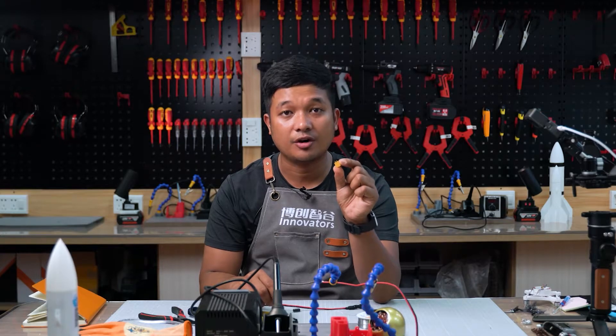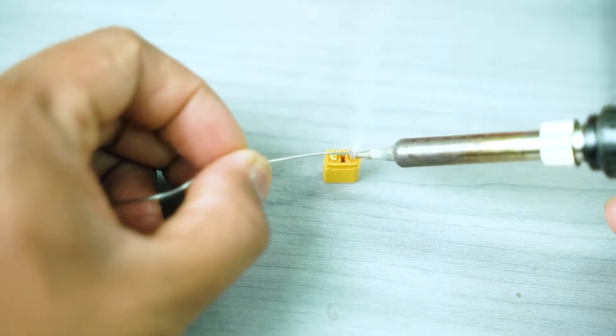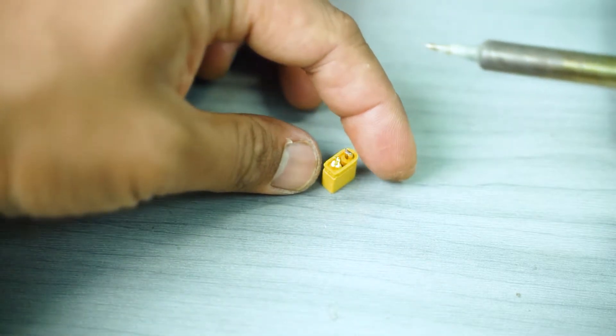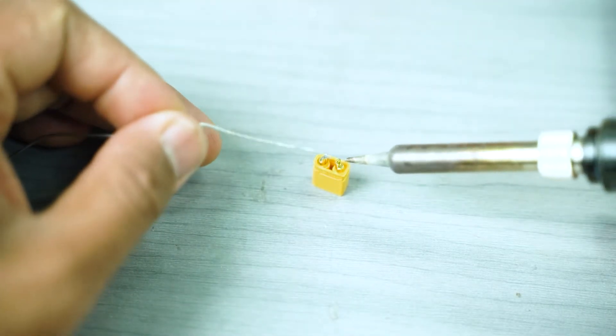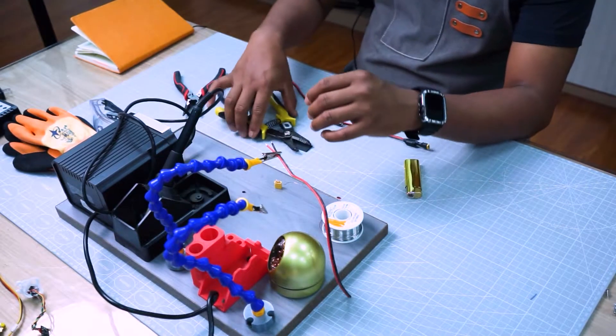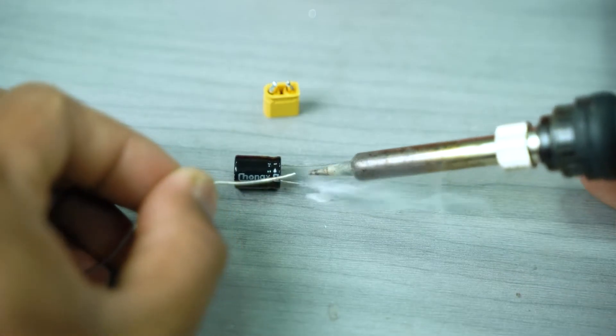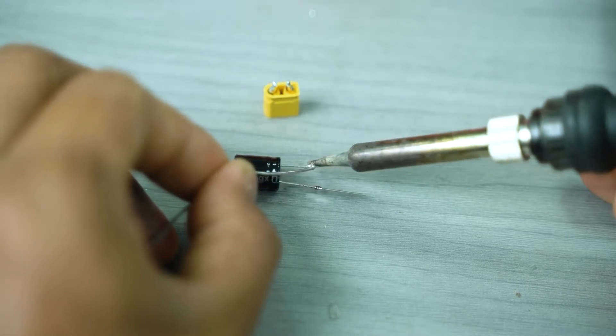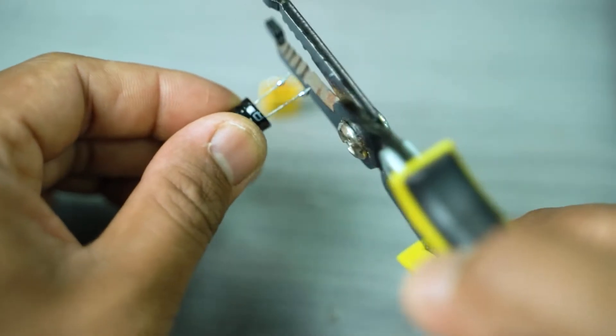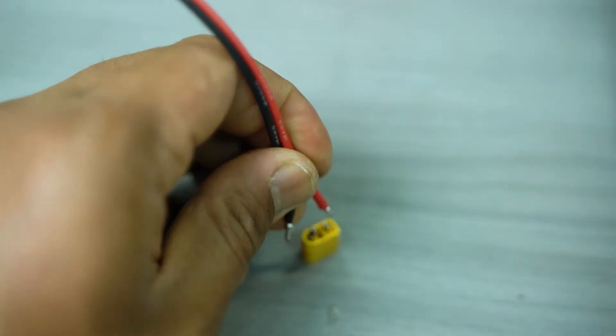Apply soldering lid to the XT-30 male socket. Apply also soldering lid to the capacitor.